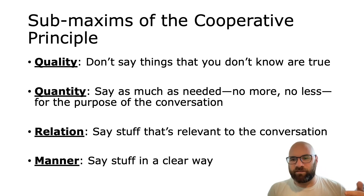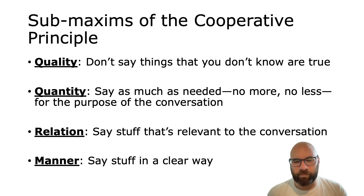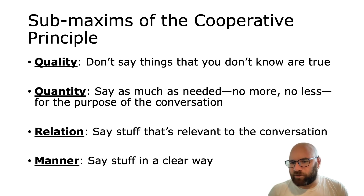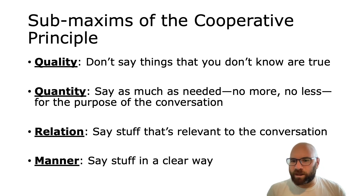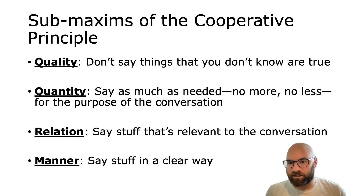This is obviously false, and it's obvious that I know it's false. There's probably no reason to believe that I think I'm the queen of England. So it looks like I'm obviously violating the maxim of quality — I'm obviously saying something that I know is false. You could assume I'm not a cooperative speaker or that I'm crazy, or you could assume I do believe I'm the queen of England. But the most likely thing is you'll assume that I don't actually mean literally that I'm the queen of England, but I mean to express some other message — in this case, probably that I think what you told me is super implausible and I don't believe you.